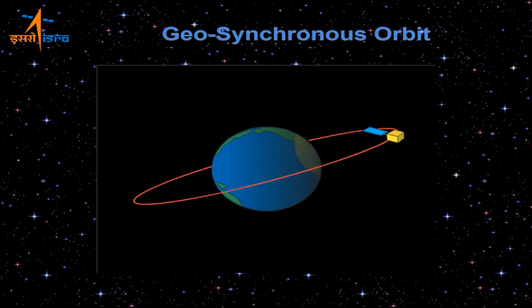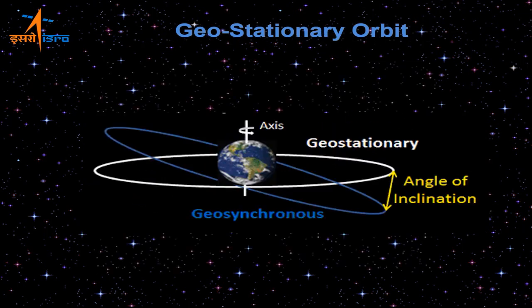Geostationary satellites are a special kind of geosynchronous satellite. In a geostationary orbit, the inclination — the angle between the orbital plane and the equator — is made zero. Essentially, a geostationary orbit is a geosynchronous orbit that is parallel to the equator. All geostationary orbits are at an altitude of 36,000 kilometers. They are commonly used for communication, but meteorological satellites are also placed here. Geosynchronous orbit is also used for the NavIC navigational constellation.